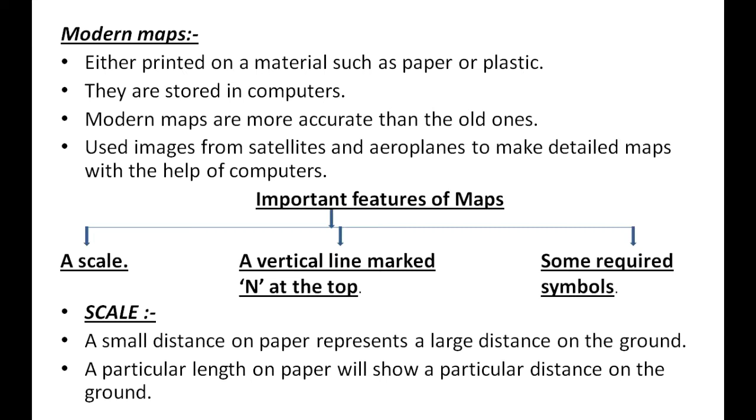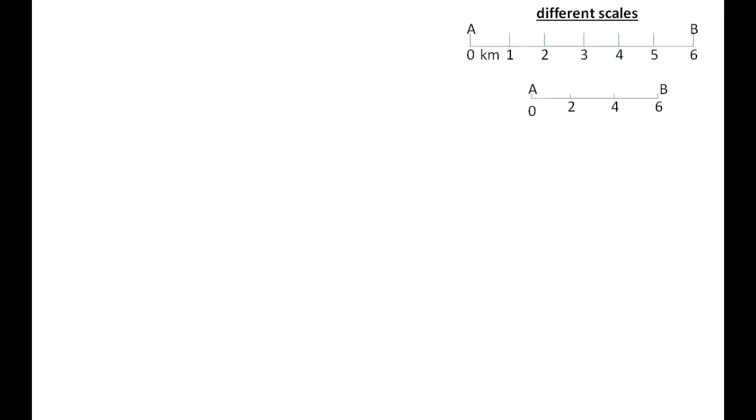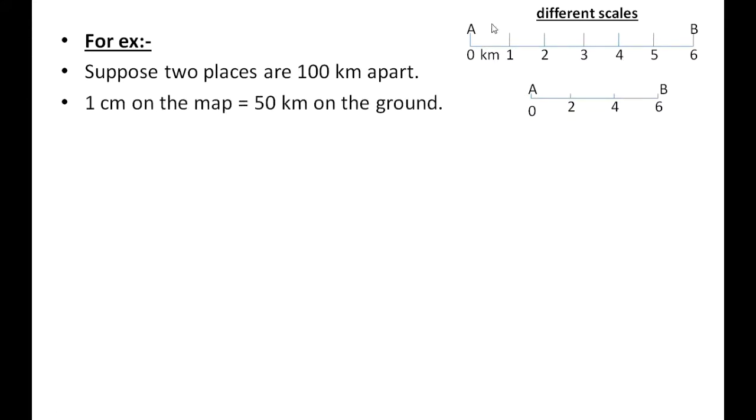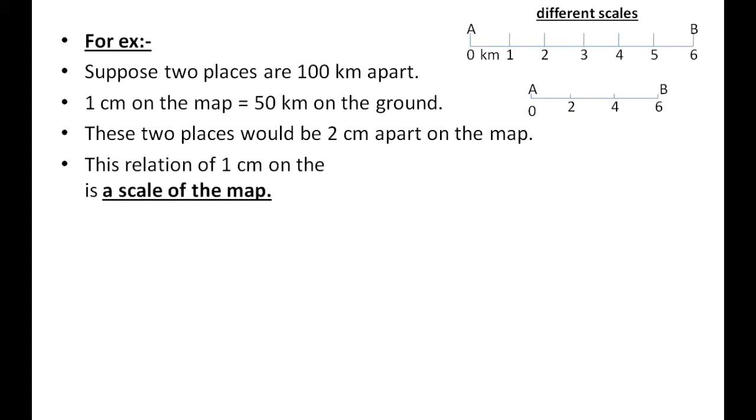For example, suppose two places are 100 kilometers apart. One centimeter on the map equals 50 kilometers on the ground. These two places would be 2 centimeters apart on the map. This relation of 1 centimeter on the map representing 50 kilometers on the ground is the scale of the map.